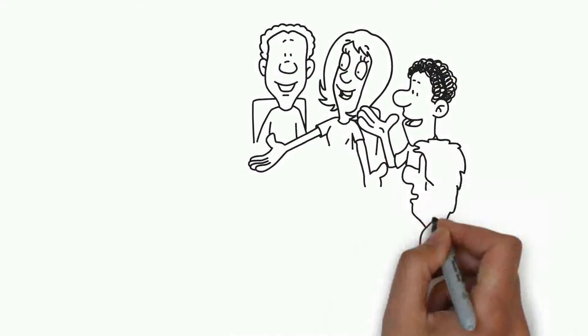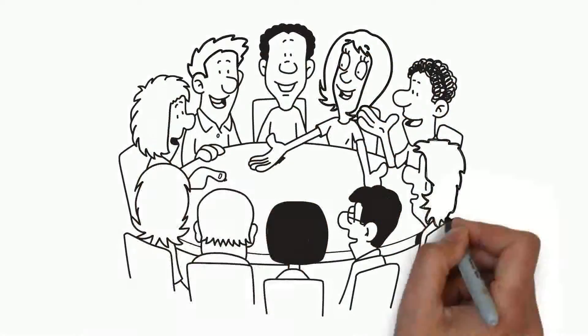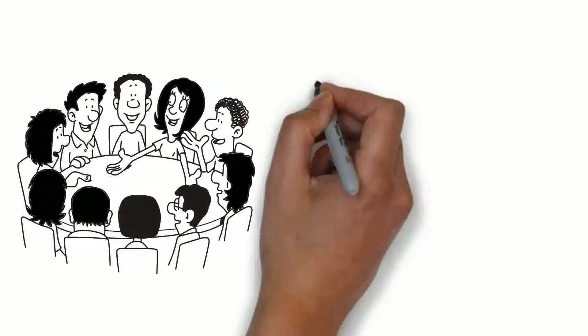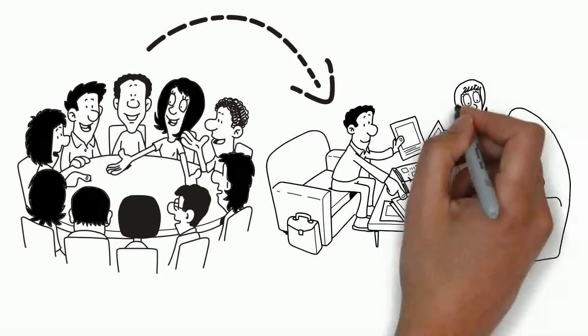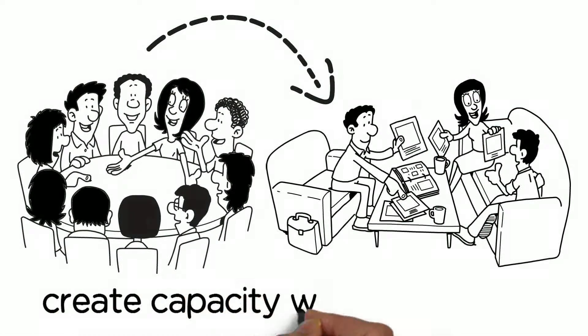Many teams and organizations make great plans at the beginning of each year about the things they want to start doing, but they struggle to clearly articulate what they will eliminate to create capacity within their team.